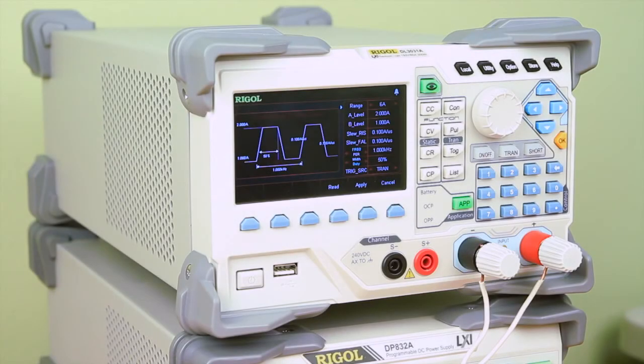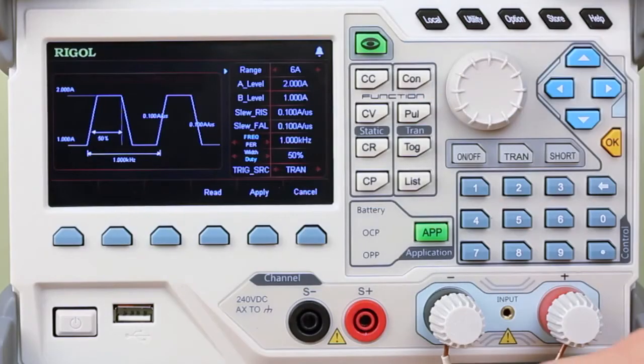Now for our transient test. We're going to start with three different ways to look at pulsed current in your load. The first is Continuous Mode. Here in Continuous Mode,